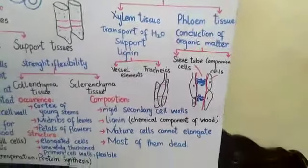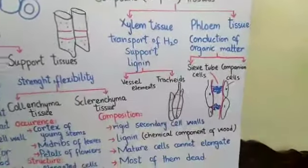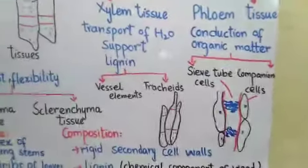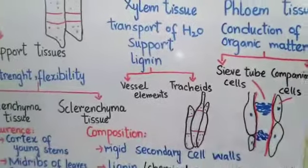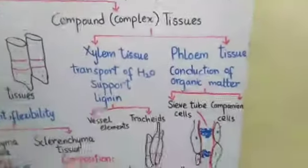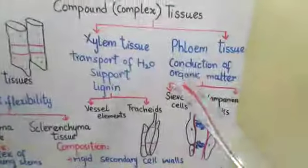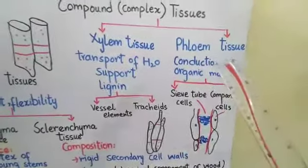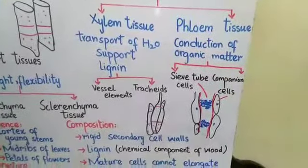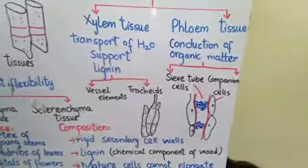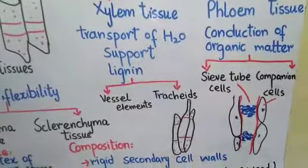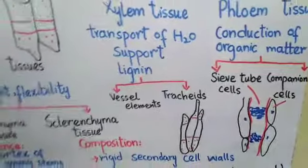The next type of complex tissue is phloem tissue. What is the role of phloem tissue in plants? Phloem tissue is responsible for the conduction of dissolved organic matter — it conducts food. You know that food is prepared in the leaves, so phloem tissue conducts food from the leaves to the whole body, between the different parts of the plant body.